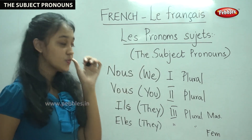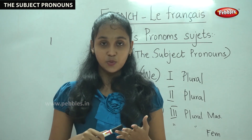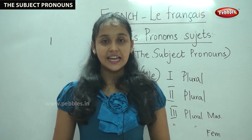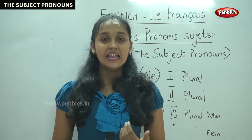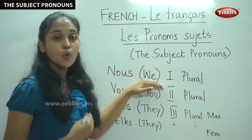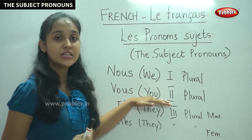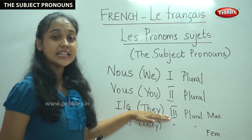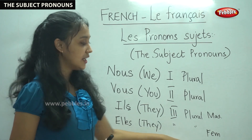So shall we say the eight subject pronouns once again? The first one is Je — Je means I. The second one is Tu — Tu means you. The third one is Il — Il means he. The fourth one is Elle — Elle means she. The fifth one is Nous — Nous means we. The next one is Vous — Vous also means you but in the plural form. The next one is Ils — Ils means they. And last it is Elles — Elles also means they but in the feminine form.